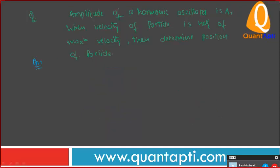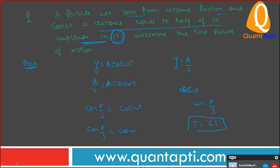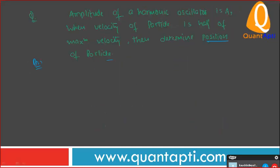Solve the question fast. How will we do it? Amplitude of a harmonic oscillator is A when velocity of particle is half of the maximum velocity. Then we demand position of the particle. Velocity of particle, what is given? Half of the maximum. What is the formula for velocity of particle? Omega A. No, that's maximum. What? Velocity, yes, velocity is this.